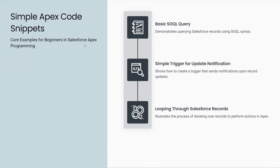Here are some examples of simple Apex code snippets. We have a basic SOQL query that demonstrates querying Salesforce records using SOQL syntax. There is also a simple trigger for update notification, showing how to create a trigger that sends notifications upon record updates, and an example of looping through Salesforce selected records, illustrating the process of iterating over records to perform actions in Apex.